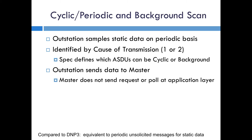Another basic function is the ability for the outstation to have either cyclic, periodic, or background scan. This is a way for the outstation to send sample data to the master on a periodic basis — really for static data which needs to be sent over. So even if the data has not changed, it's still sent with a new sample and could include a time tag. The outstation tells the master the cause of transmission: one is for cyclic, two is for background.